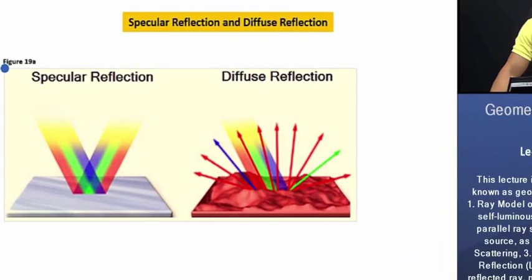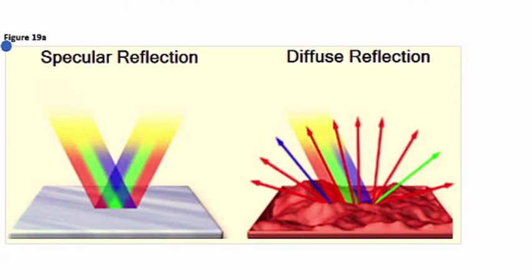Looking here at figure 19A, when a beam of parallel light rays reflect from a smooth surface, all the rays go off in the same direction. This is known as specular reflection.